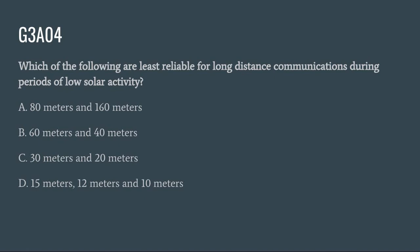G3A04: Which of the following are least reliable for long-distance communications during periods of low solar activity? A. 80 meters and 160 meters. B. 60 meters and 40 meters. C. 30 meters and 20 meters. Or D. 15 meters, 12 meters, and 10 meters. The correct answer is D: 15 meters, 12 meters, and 10 meters.